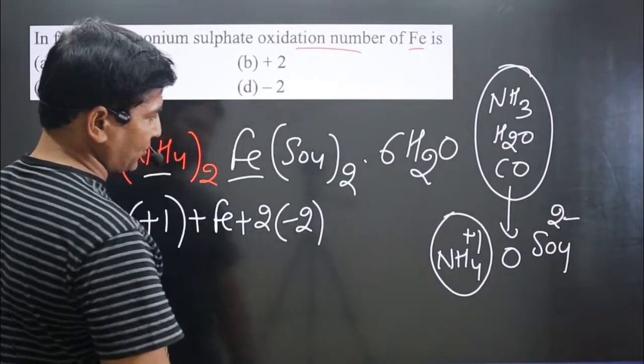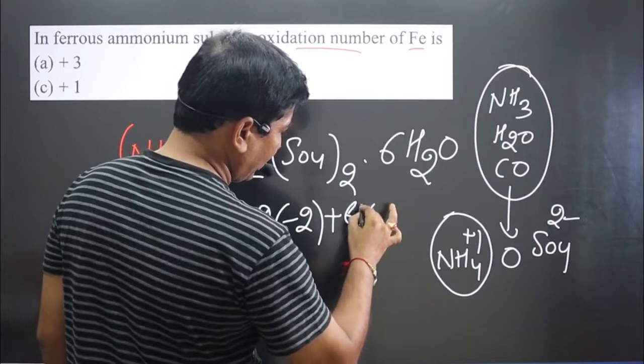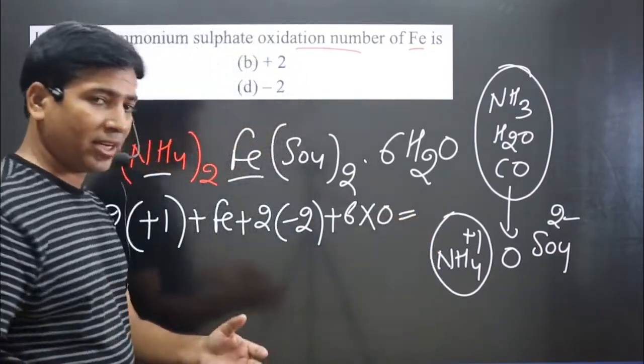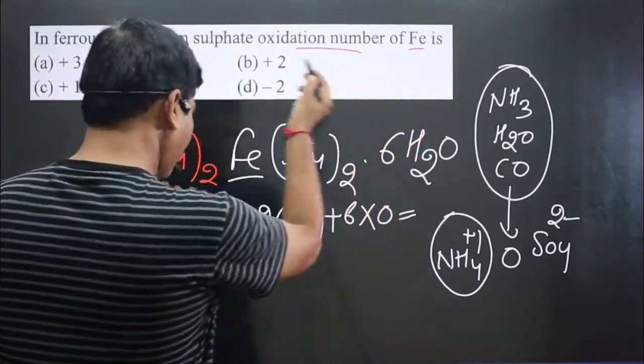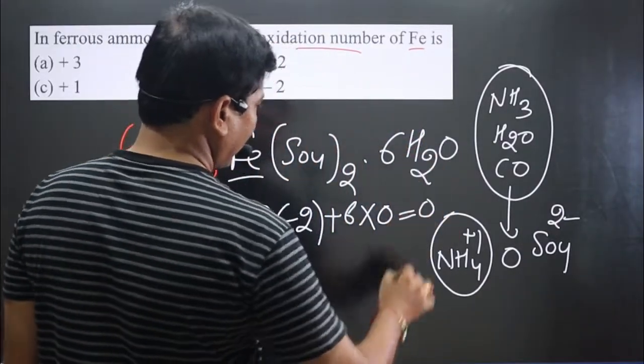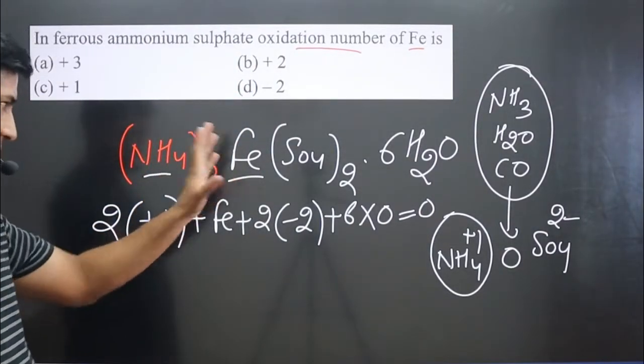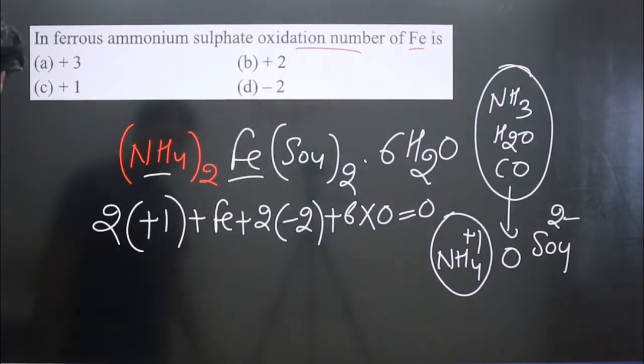Plus iron is there, plus how many sulfate ions are there? Two sulfate ions, each sulfate ion is minus two. Plus six water molecules are there, and water molecule is neutral, so six multiplied by zero. And this is a neutral complex, a double salt. We can say ammonium sulfate plus ferrous sulfate, two salts will be there.